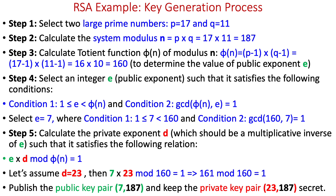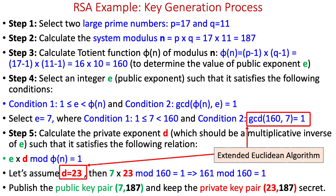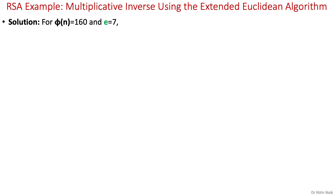Now we can publish the public key and keep the private key pair secret. We haven't yet done two calculations: first, the GCD of 7 and 160, and second, finding d = 23, the private exponent. We can calculate both values using a single method called the extended Euclidean algorithm. I've explained the extended algorithm in a separate video, but we'll look at it here again in the context of RSA encryption algorithm.